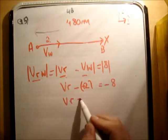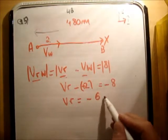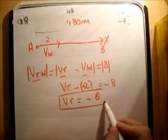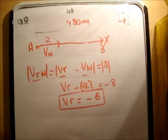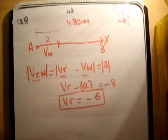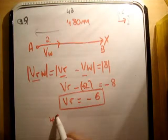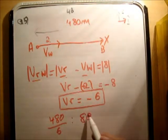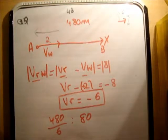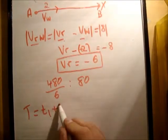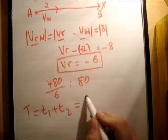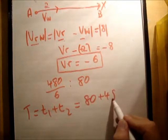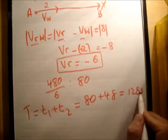So VR in this case turns out to be negative 6 units. And that of course makes sense, because we're actually being slowed down by the current. So it's 480 meters divided by 6 meters per second. And we do that in 80 seconds. So capital T, the total time, is equal to T1 plus T2 is equal to 80 plus 48, 128 seconds.